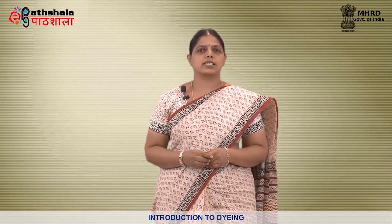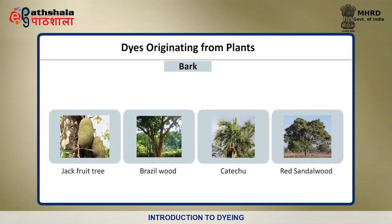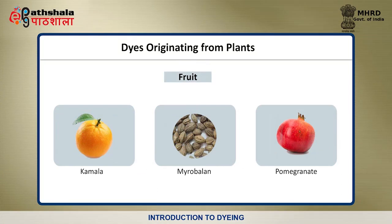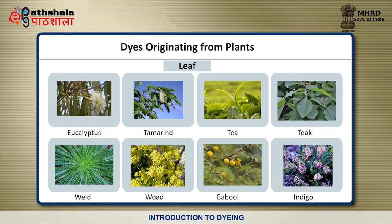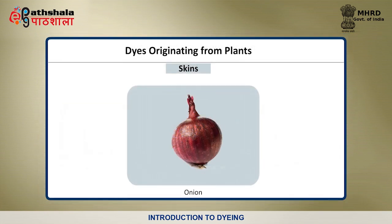The first sub-classification under natural dyes is from plant origin. The majority of plant natural dyes are from vegetables. Different parts of plants are used to make dyes — for example the leaves, the skins of fruit, the barks, roots or wood. Colors extracted from plant barks include jackfruit tree, brazilwood, catechu and red sandalwood. Colors from plant flowers include dahlia, flame of forest tree, marigold, safflower. Colors from plant fruit include kamala, myrobalan, pomegranate. Colors from plant leaves include eucalyptus, tamarind, tea, teak, weld, woad, and indigo. Colors from plant roots include dolu, madder, turmeric. Colors from plant skins include onion, and from plant stigma — saffron.